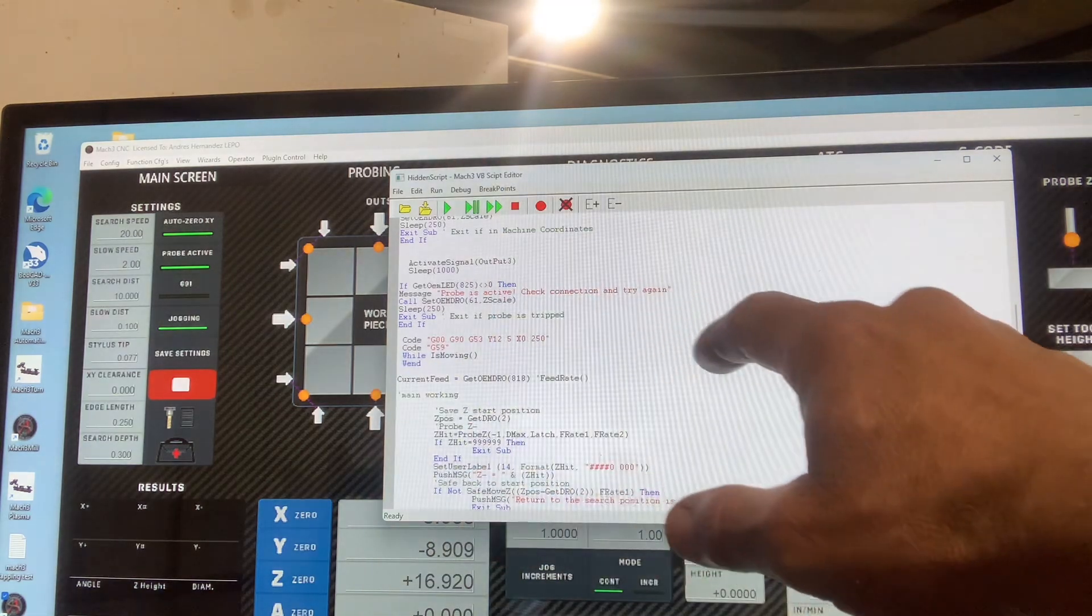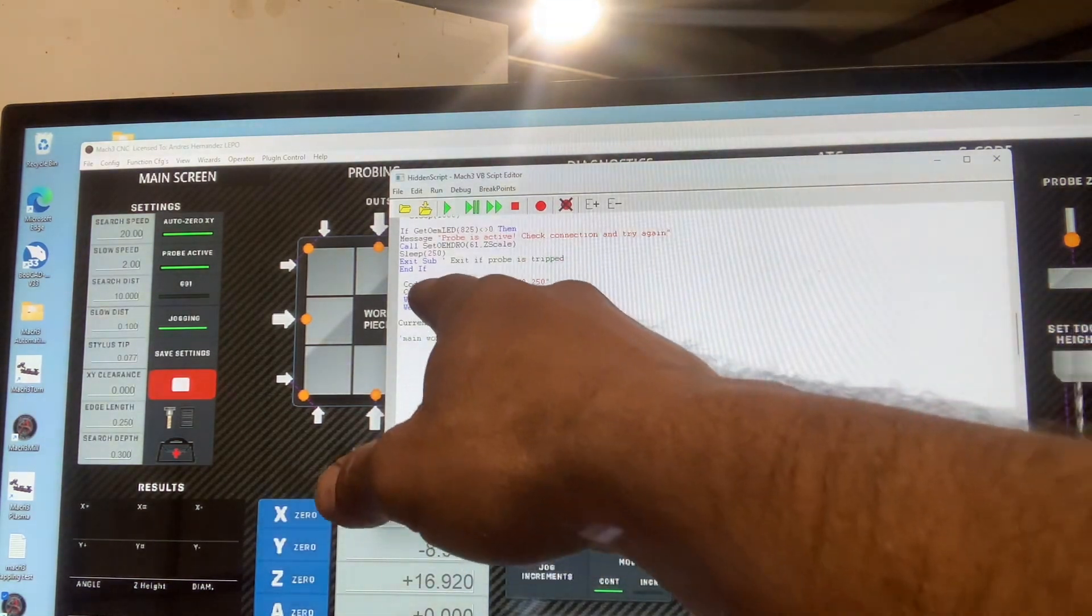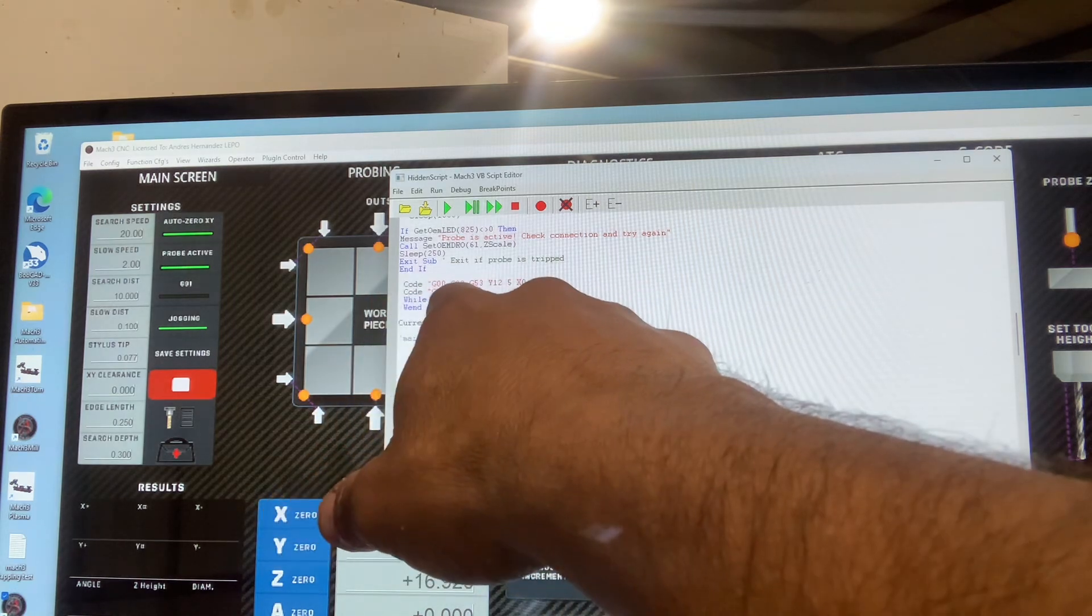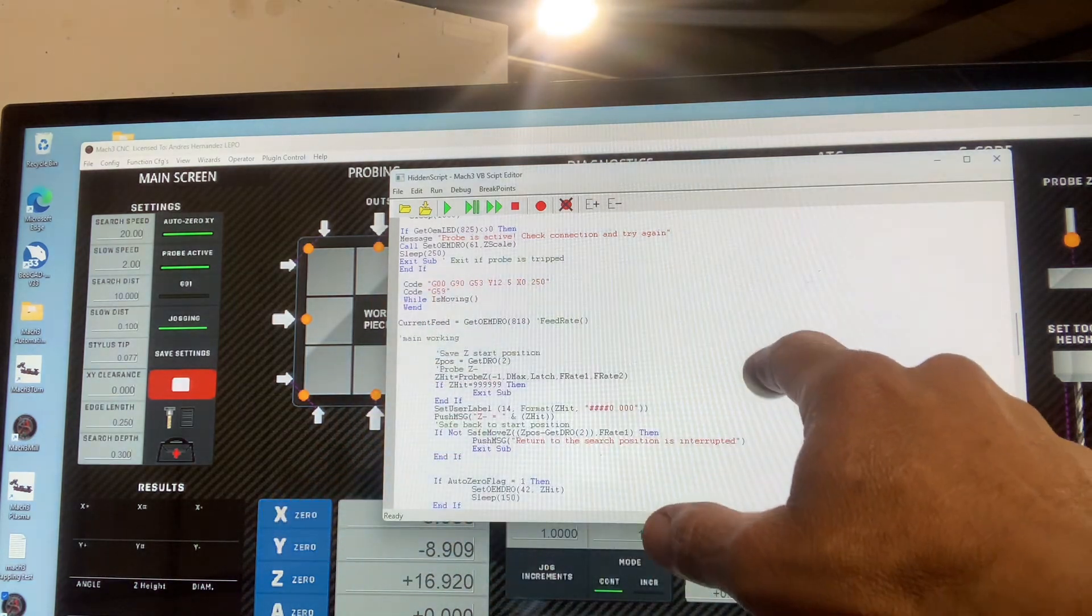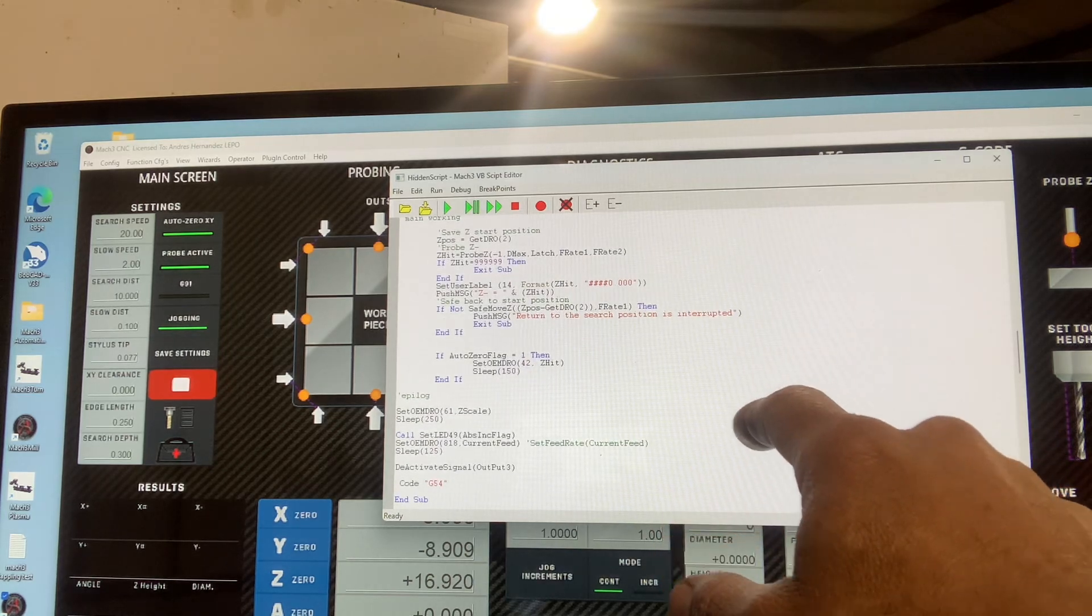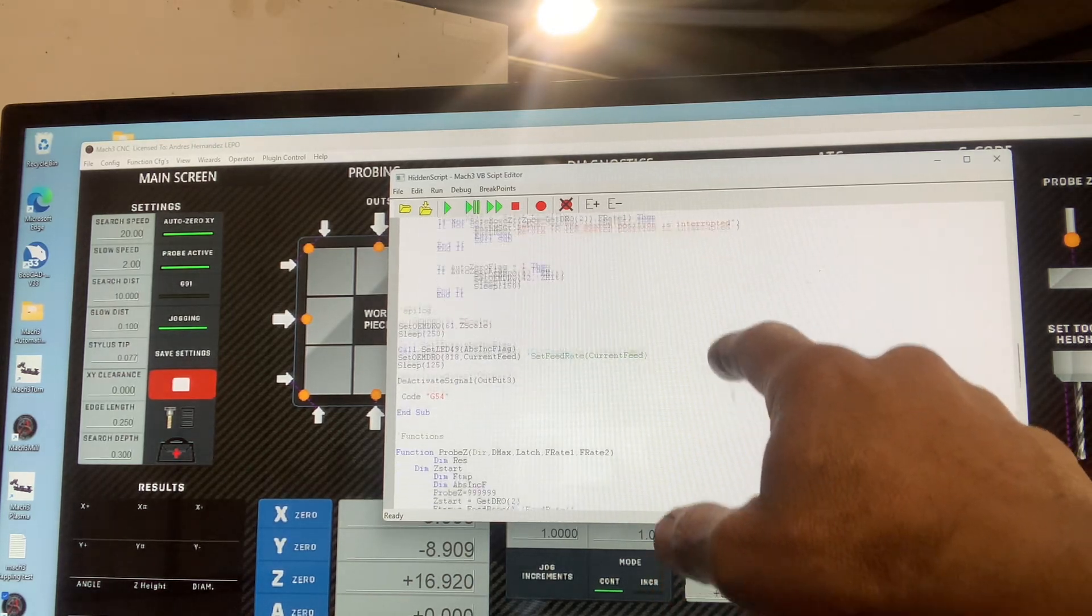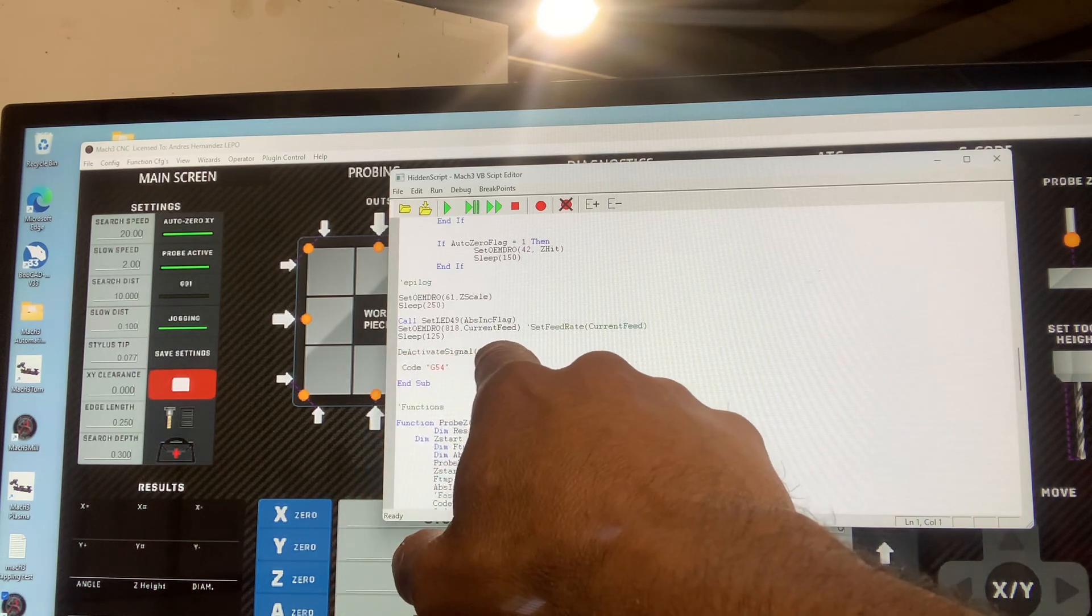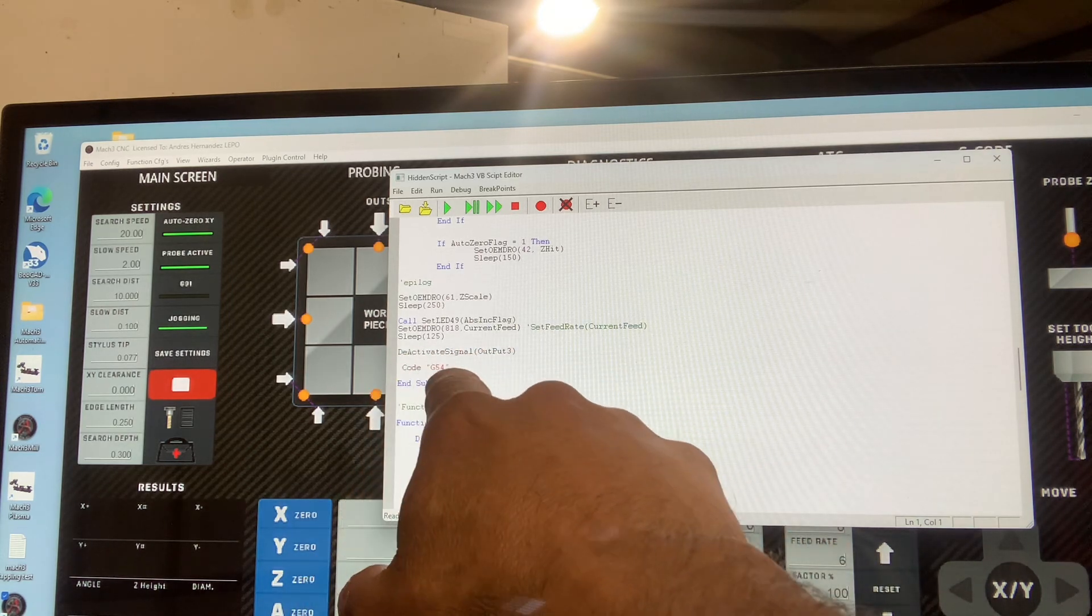If everything goes good, this LED goes off and the rest of the macro will work. Then I just move to wherever the tool setter is. I move to G59 work offset. The main part works, then at the end I deactivate output number three and move back to G54.